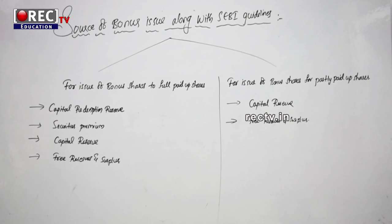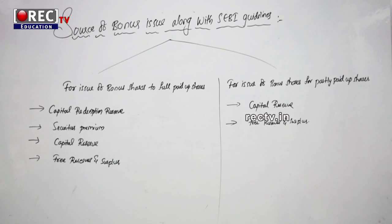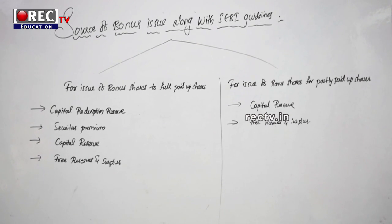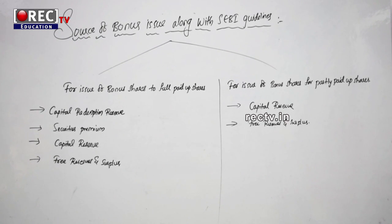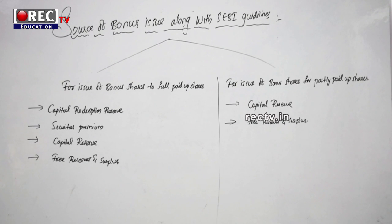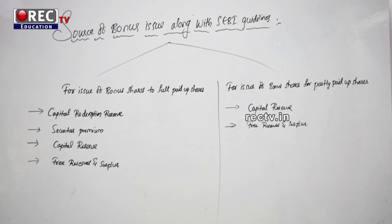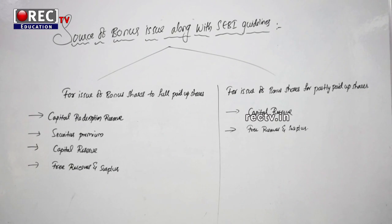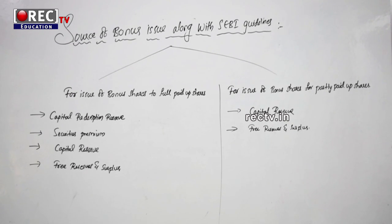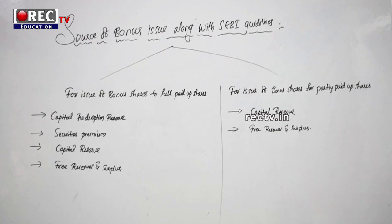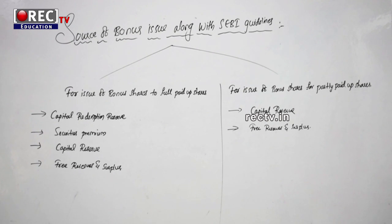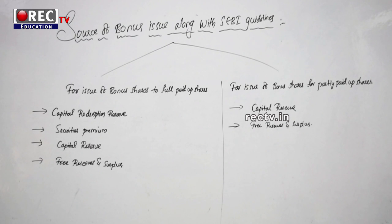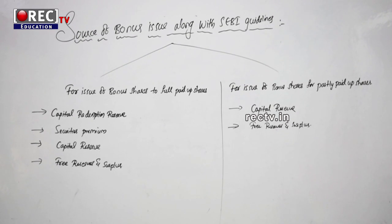For issue of bonus shares for partly paid up shares, we can use only capital reserve and free reserves and surplus. Capital redemption reserve is only used for bonus issue. Securities premium — only the amount realized in cash can be used for the bonus issue. Capital reserve is capital income minus capital expenditure, and whatever income is derived can be transferred to capital reserve and used for the bonus issue. Free reserves and surplus is not only for bonus issue — it can also be used for any business purpose. For partly paid up shares, there are only two sources: capital reserve and free reserves and surplus.